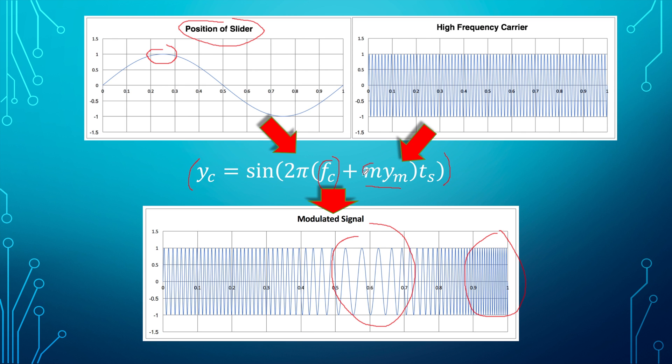As for the m, it is just a multiplier that allows this function to have a greater effect on the frequency of yc.